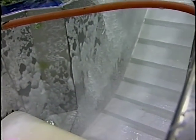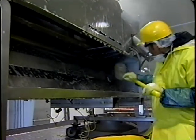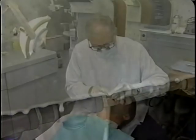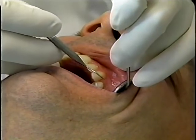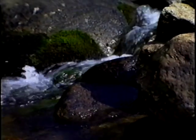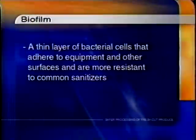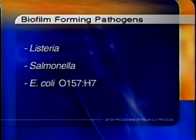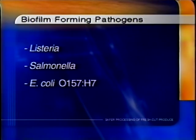What is the importance of acceptable equipment construction and proper cleaning and sanitizing activities? Acceptable equipment construction and proper cleaning and sanitizing play a key role in the control of biofilm. Have you heard your dentist talk about removing plaque from your teeth? Have you ever walked across a stream and slipped on slimy rocks? These are both common examples of biofilms. Biofilm can be defined as a thin layer of bacterial cells that adhere to equipment and other surfaces and are more resistant to common sanitizers. Various pathogens such as Listeria, Salmonella, and E. coli O157:H7 have been shown to form biofilms that can contaminate food products during production.